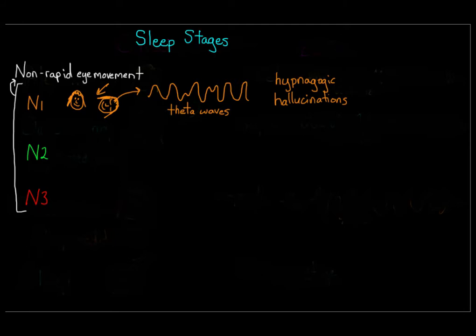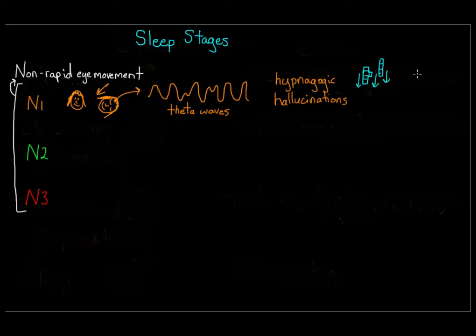If you've been doing something really repetitive just before bed, that can recur in your hypnagogic state. For example, if you've been on a boat all day, you may still feel like you're on water when you drift off to sleep. This is actually called the Tetris effect — if you've been playing Tetris for a long time right before bed, you might see visual images of blocks moving. Another common feeling during this stage is a sensation of falling, which leads to hypnic jerks, those muscle twitches you sometimes experience as you fall asleep.